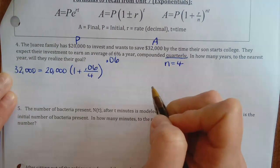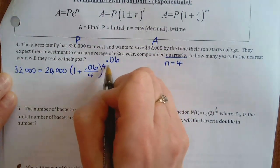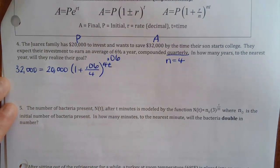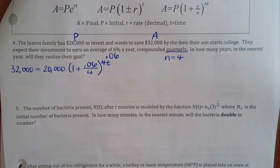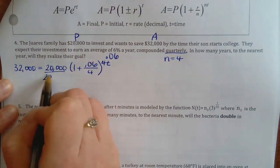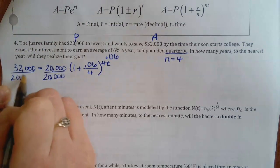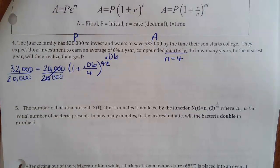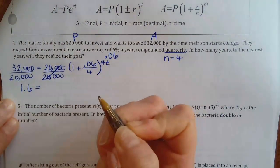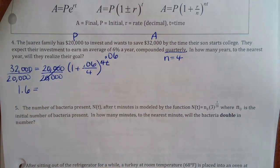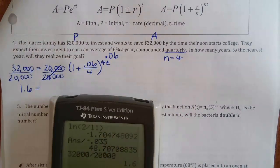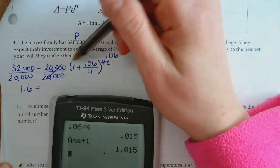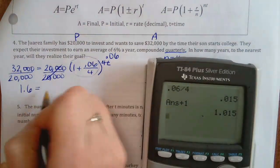They're investing $20,000 — that's the initial investment — and they want it to reach $32,000, so set it equal to 32,000. The exponent is NT, which is 4T since it compounds four times a year. Isolate: divide 32,000 by 20,000, which gives 1.6. Also clean up the inside: 0.06 divided by 4, plus 1, to get the base.